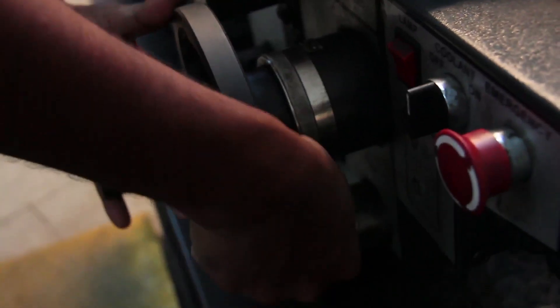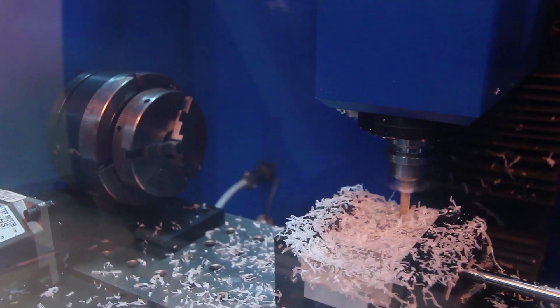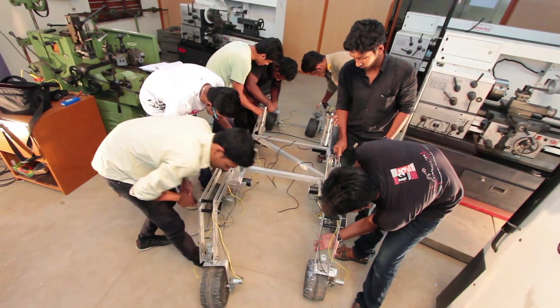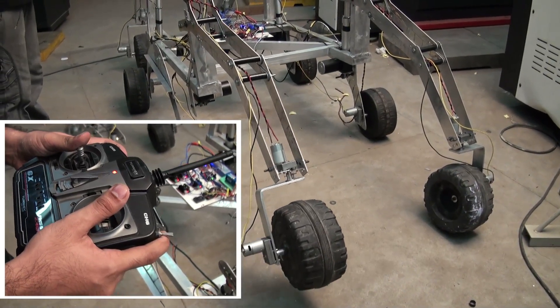Typically, Rovers are a six-wheel system that use a rocker bogey mechanism. One of the greatest challenges of a rocker bogey mechanism is that it cannot traverse over an obstacle which is greater than twice its wheel diameter.